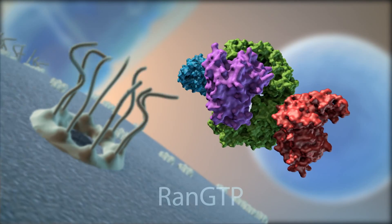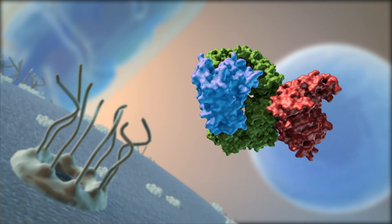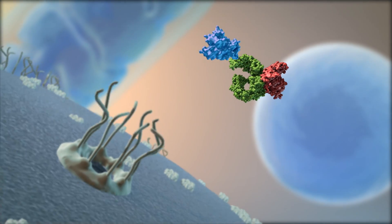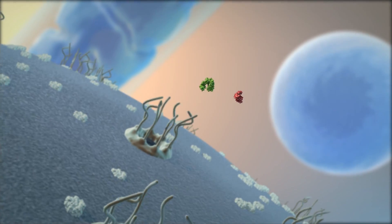This causes RAN-GDP to detach from exportin. Exportin loses affinity and unbinds from the cargo protein.